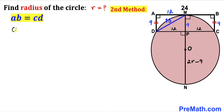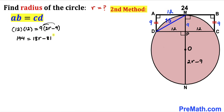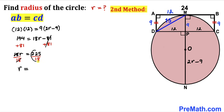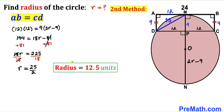Chords CD and MN intersect at point P, giving segments 12, 12, 9, and 2R − 9. Applying the intersecting chords theorem: 12 × 12 = 9 × (2R − 9). This gives 144 = 18R − 81. Adding 81 to both sides: 18R = 225. Dividing by 18, R = 25/2 = 12.5 units — confirming our answer by the second method.